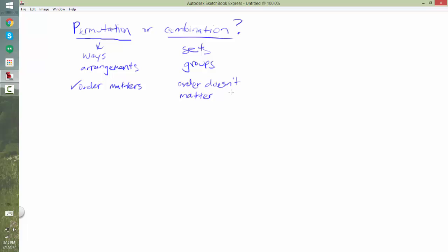it doesn't really matter what order they're in. I'm not being asked if they're in a particular order. I'm just saying how many groups of three? So the group A, B, C is the same as C, B, A. So order doesn't matter. Let me give you an example of how this would look in terms of how to actually do it.